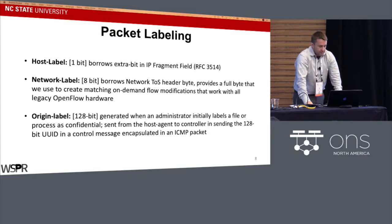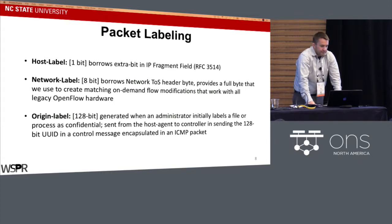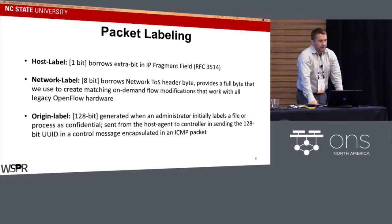A key element of our design is persistent labels that travel with packets. There are three key labels placed on packets. First, a host label where one bit is borrowed from the IP fragment field — this is the evil bit, required by the CamFlow kernel to indicate it's processing a confidential packet. Second, we borrow a full byte from the network type-of-service header to create steering-on-demand rules using OpenFlow, compatible with all legacy hardware back to version 1.0. Third, the origin label is a 120-bit universally unique identifier that the host agent sends directly to the controller to indicate the origin of the confidential information in a flow.